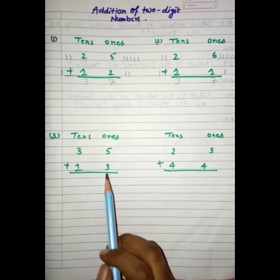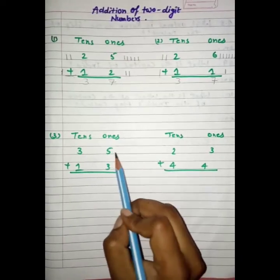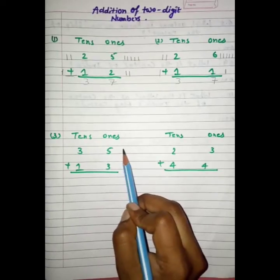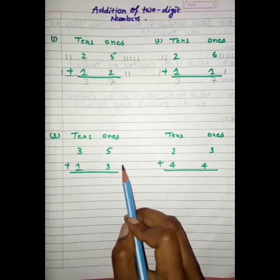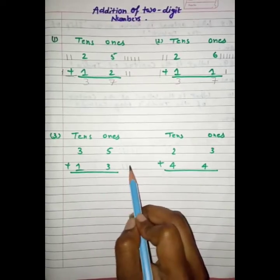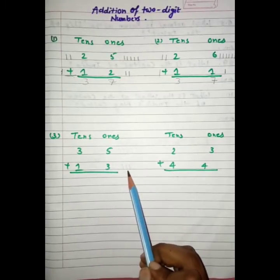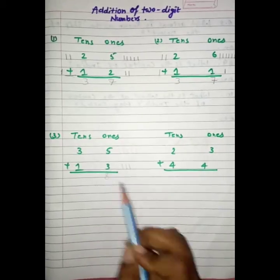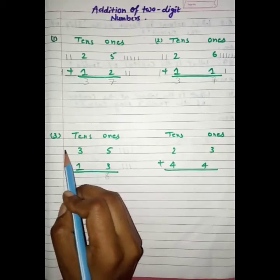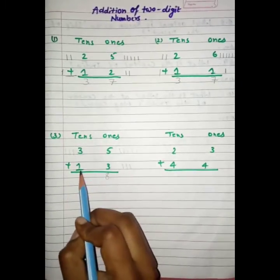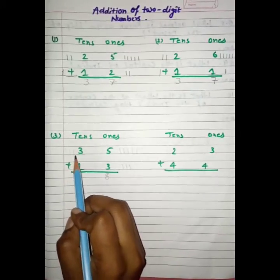Students, see the 3rd question. We have to add 5 and 3. So, we have to draw 5 lines: 1, 2, 3, 4, 5. And here we have to draw 3 lines: 1, 2, 3. Ab hum count karen ge: 1, 2, 3, 4, 5, 6, 7, 8. We have 8. And here we draw 3 lines and 1 line, count: 1, 2, 3, 4. We have 4.